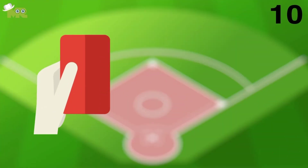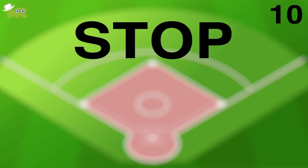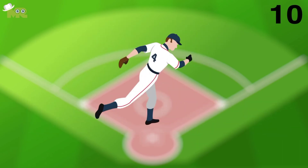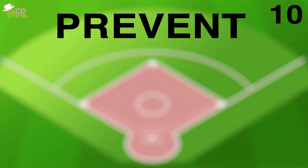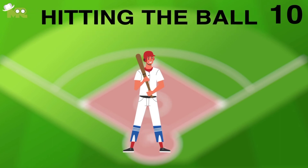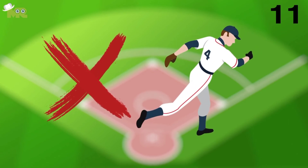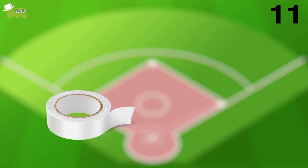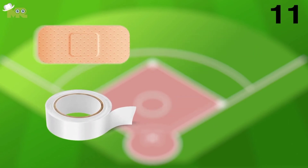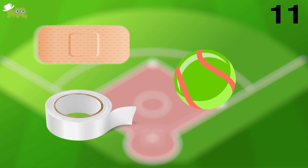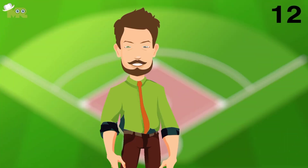Rule 10: It is not allowed for the pitcher to stop or bounce the ball in a pitching position, as it may prevent the batsman from hitting the ball. Rule 11: It is strictly forbidden for the pitcher to use any kind of tape or other substance on the ball. Rule 12: The pitching delivery shall have an arc of 6 to 10 feet.